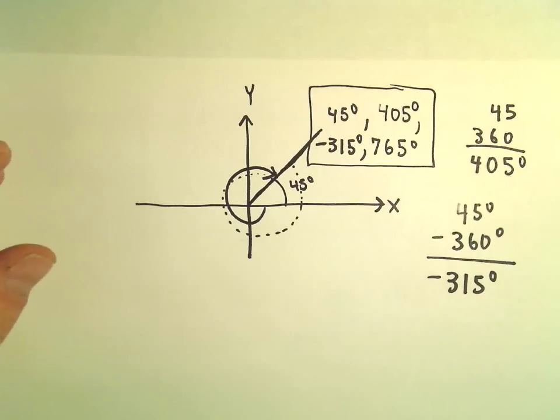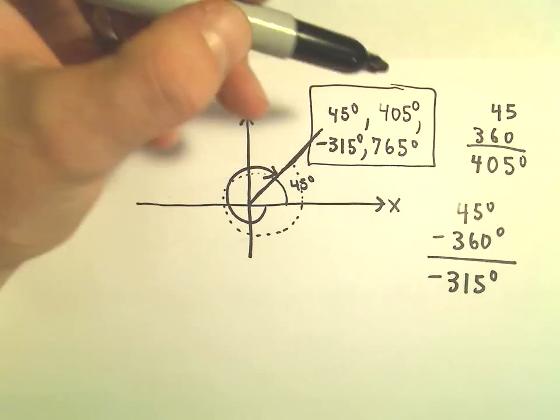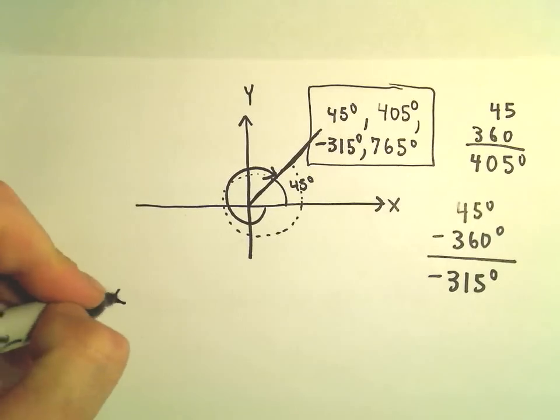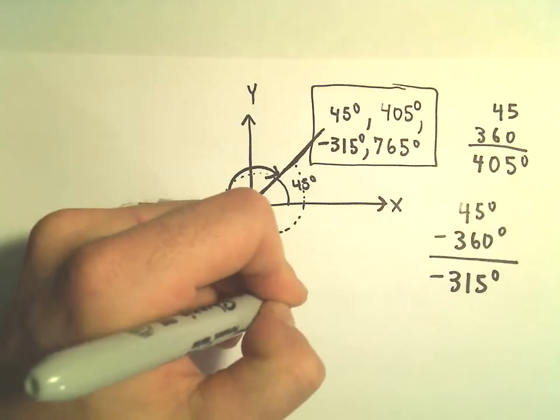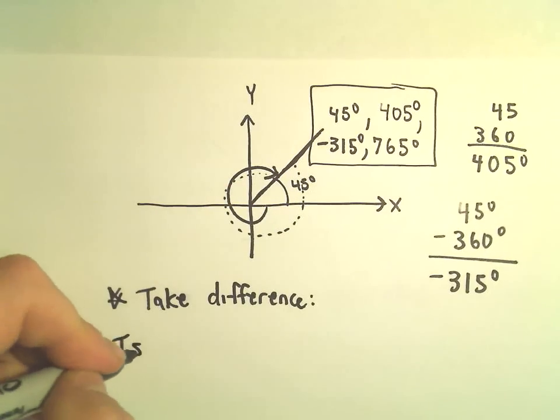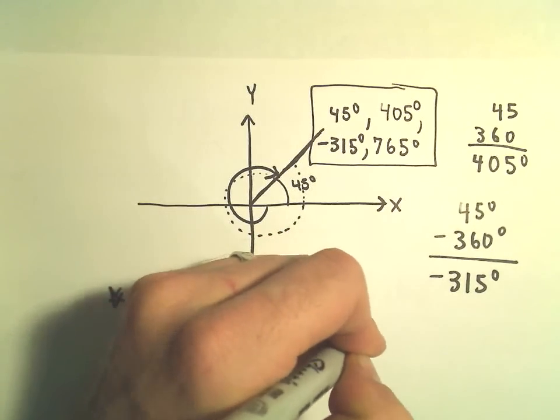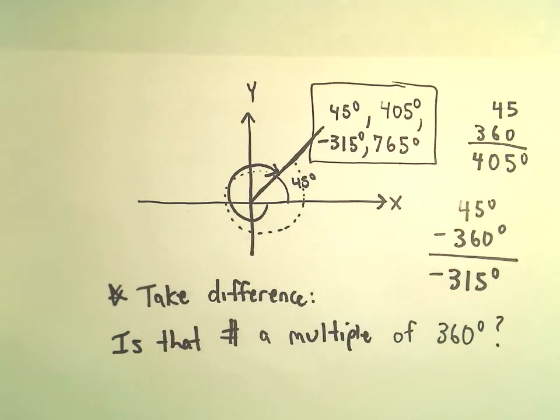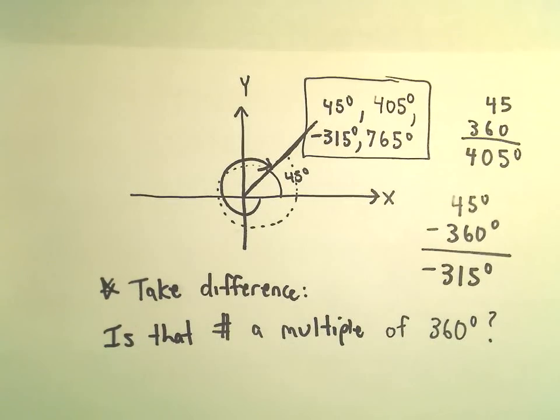So this is the basic idea to find coterminal angles. One way to find them is to just simply look at their difference and see if they're a multiple of 360. So that's kind of the main idea: take the difference and ask yourself, is that number a multiple, positive or negative, of 360 degrees? That's how we're actually going to start checking and trying to determine if two angles are in fact coterminal.